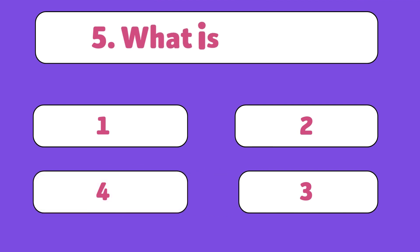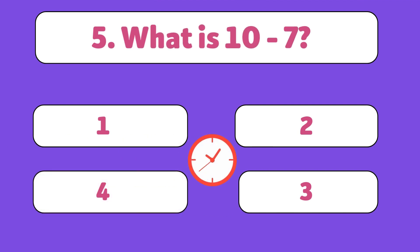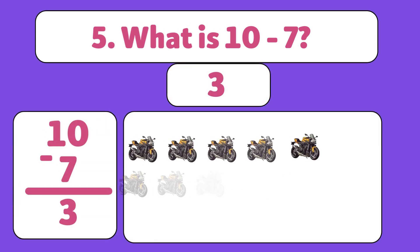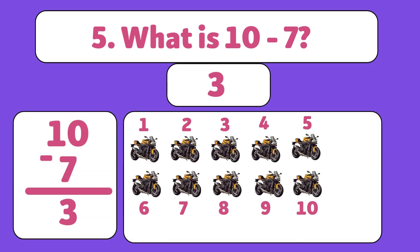What is 10 minus seven? The answer is 3. We start with 10 motorbikes and take away 7. Let's count: 1, 2, 3, 4, 5, 6, 7. We have 3 motorbikes now.